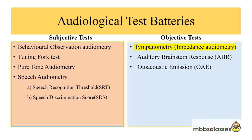Tympanometry is one of the tools to assess hearing. It is an objective test for audiological evaluation. Audiological test batteries are divided into two groups: subjective tests and objective tests. Subjective tests include behavioral observation audiometry, tuning fork test, pure tone audiometry, and speech audiometry. Objective tests for audiological evaluation include tympanometry, auditory brainstem response (ABR or BERA), and otoacoustic emissions.